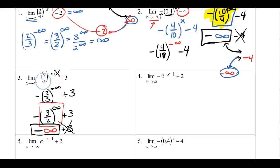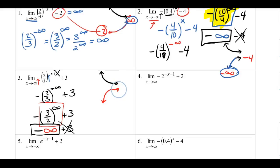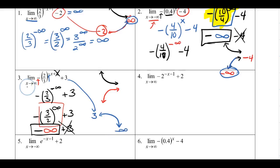Graphically for Example 3: 2/3 is less than 1, so it's a decay function that levels off. The negative in front reflects it vertically, and the negative exponent reflects it horizontally. As x approaches positive infinity — tracing to the right — the graph heads down toward negative infinity.